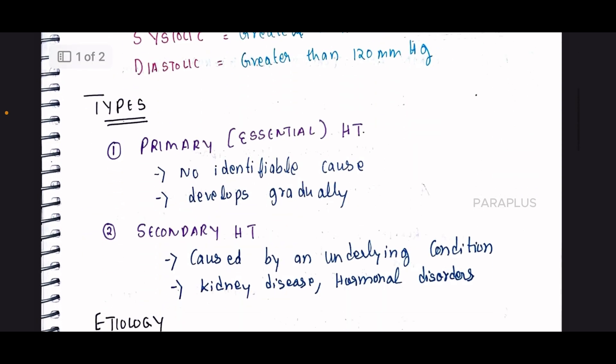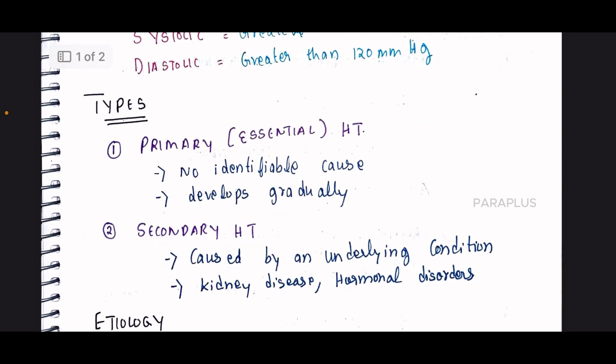So there are types of hypertension — two types: primary and secondary. Primary is essential hypertension, and secondary is secondary hypertension. Primary hypertension is gradually developed, while secondary hypertension has a different cause.